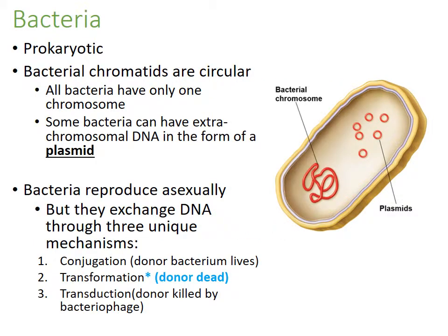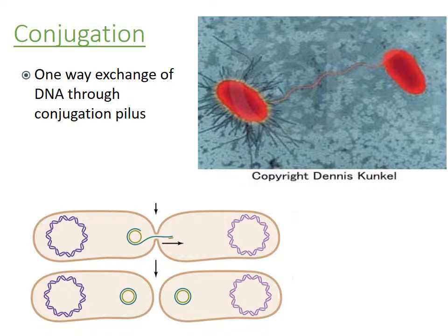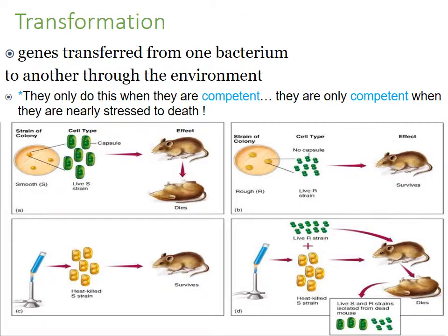Bacteria are prokaryotic and have a single circular chromosome with extra-chromosomal DNA in the form of plasmids. Bacteria reproduce asexually by binary fission, but they can exchange DNA through three unique mechanisms: conjugation, transformation, and transduction. Conjugation is the only mechanism where the donor bacterium actually lives — it involves a sex pilus or conjugation pilus, a protein tube through which a plasmid is passed from one bacterium to another. Transformation is when genes are transferred through the environment, and bacteria can only do this when they're very stressed and competent. The classic experiment with live R strain and heat-killed S strain showed transformation in mice.